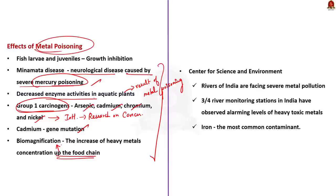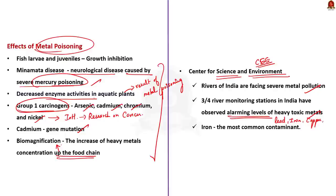The Centre for Science and Environment has reported that rivers of India are facing severe metal pollution. They found that 3 out of every 4 river monitoring stations in India have observed alarming levels of heavy toxic metals such as lead, iron, nickel, cadmium, arsenic, chromium, and copper. Iron has emerged as the most common contaminant. Remember these facts — they will be useful for your prelims examination.